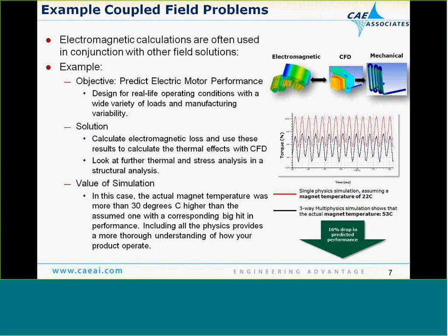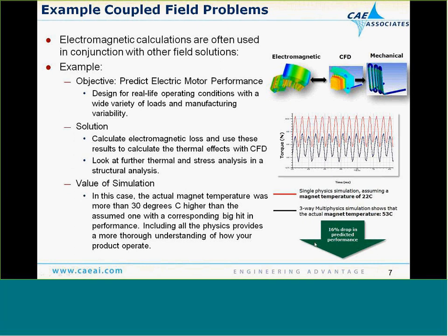Many electromagnetic simulations are really coupled field simulations — we need to solve the electromagnetic problem in conjunction with other field solutions. For example, in a performance analysis of an electric motor, looking at torque at constant room temperature gave one result. But when we fed the electromagnetic results into a thermal calculation to account for heat-up of the parts and then redid the electric analysis iteratively, we found a 16% drop in performance. The temperatures were affecting the electromagnetic response, so it's important to consider coupled fields.